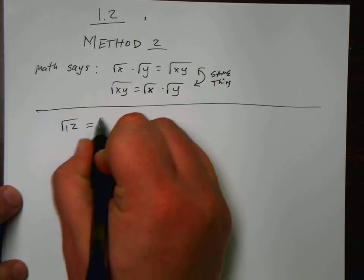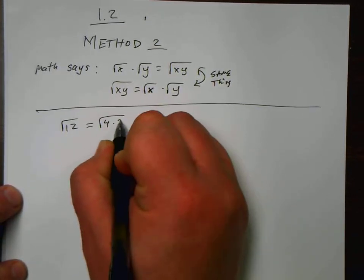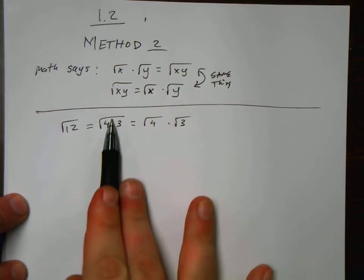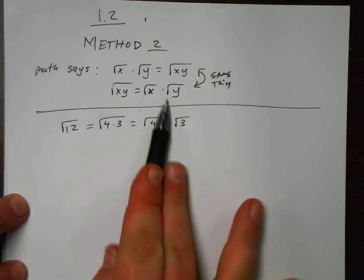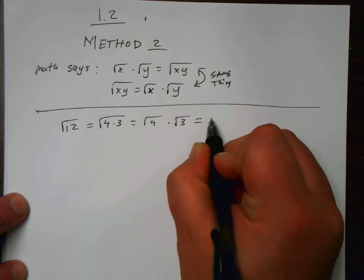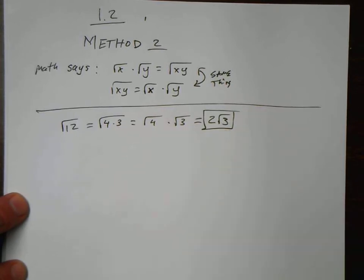Well, I know that 12 breaks into 4 times 3, and I know that the square root of 4 and times the square root of 3, right? The square root of two things being multiplied, I separated it into 2. Well, the square root of 4, what's that? Well, that's just 2, and I'm left with 2 roots of 3.